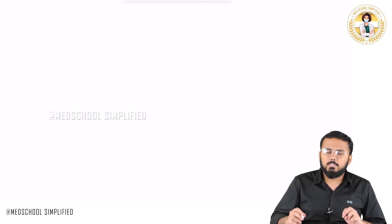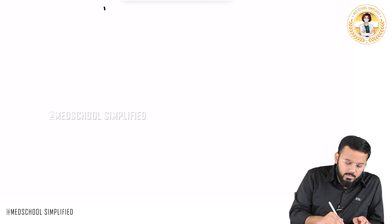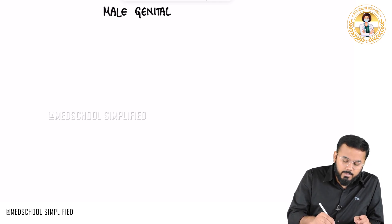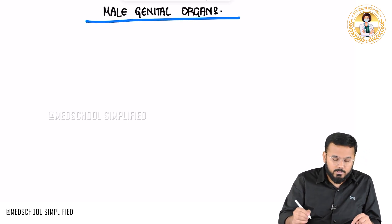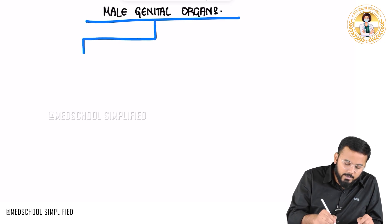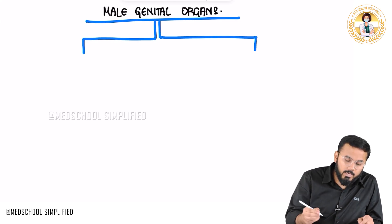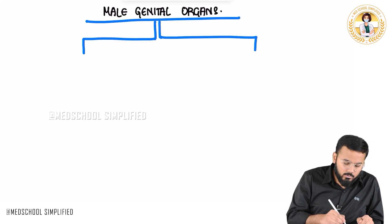Hello guys, so now we shall be discussing regarding the male genital organs. These male genital organs are basically divided into two groups: one group is called the external genital organs and the other one is called the internal genital organs.